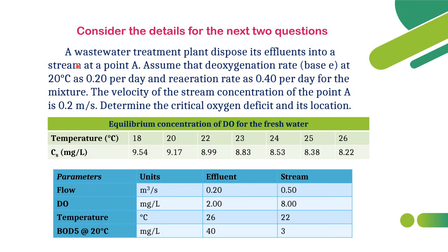For the next two questions, consider the following: a wastewater treatment plant disposes effluent into a stream at point A. The deoxygenation rate at 20°C is 0.2 per day, and the reoxygenation (reaeration) rate is 0.4 per day. Velocity of stream is 0.2 m/s. We must determine the critical oxygen deficit and its location, using the provided tables for interpolation.